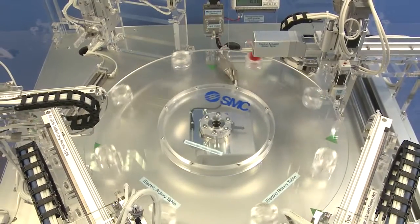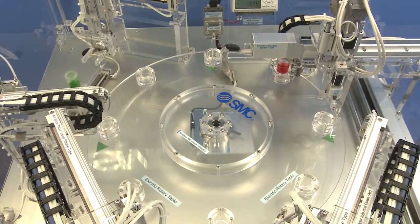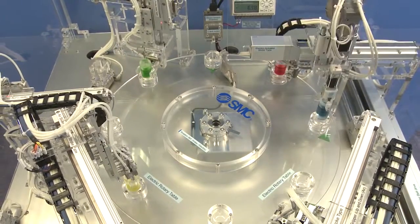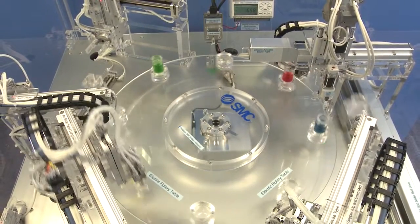First up, we have the LER electric actuator rotary table. This rotary table system allows up to 360 degrees motion as a continual action, so you can keep it going round and round.